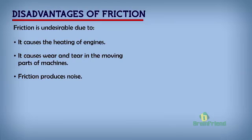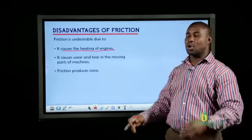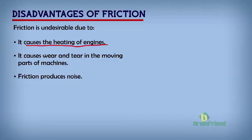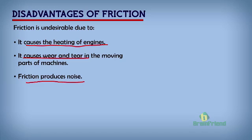Let's now look at the disadvantages. Friction is undesirable — one, because it causes heating of engines. Because of the opposition to motion, heat is usually generated in engines, and that heat is a result of friction between the parts of the engines when they move one against another. Another disadvantage is that friction causes wear and tear in moving parts of machines, which can bring the machines to a stop and will require repairs. Another disadvantage of friction is that it produces noise — most times loud, irritating noise.